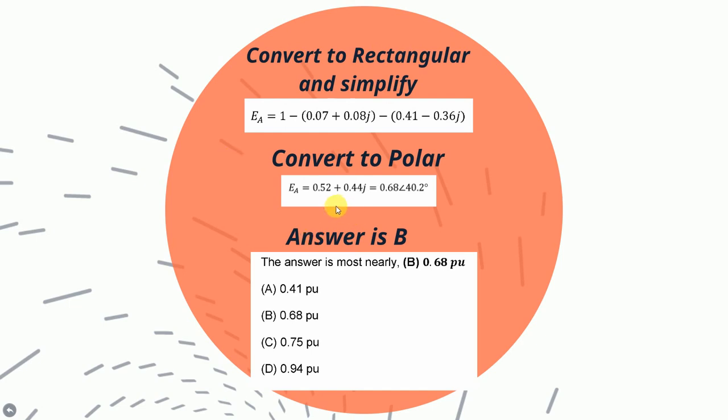And once it's down here, you have to convert it back to polar, so you can get the phasor magnitude, which will result in the correct answer being B, 0.68 per unit.